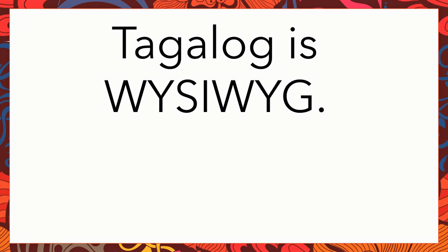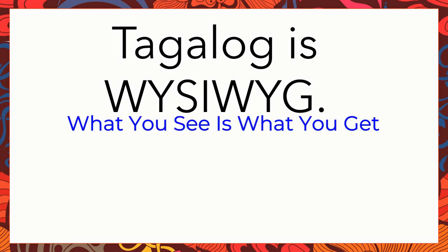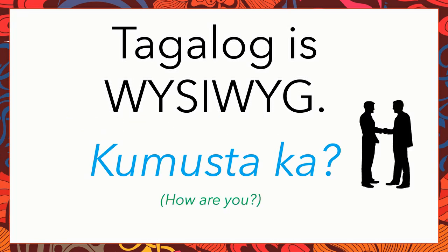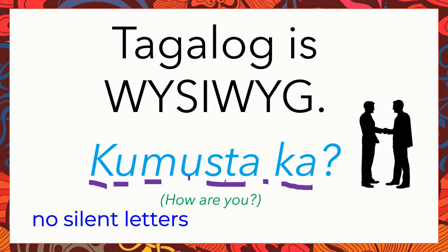So first, let's talk about one huge difference between Tagalog and English. Tagalog is WYSIWYG, which means what you see is what you get. So when you see two words, kamusta ka, which means how are you, we are actually sounding off each letter — K-U-MUS-TA-KA. There are no silent letters, no useless letters. We are sounding off each one. So that's how we speak, read, and write Tagalog.